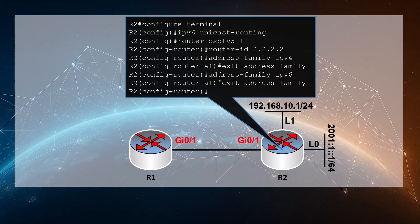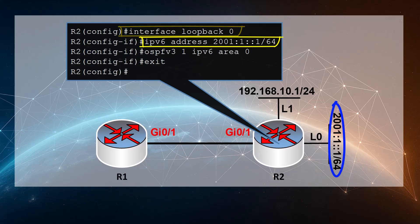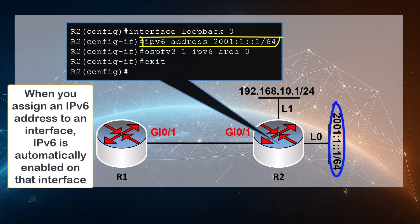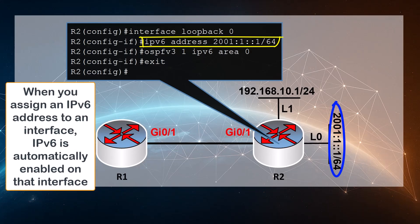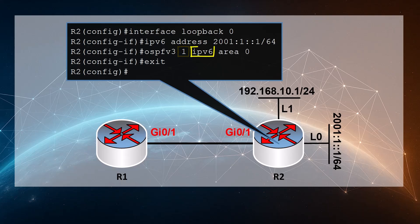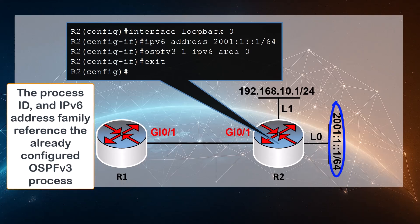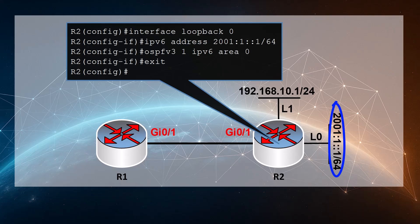Now R1 and R2 have IPv6 enabled, OSPF version 3 running, and both IPv4 and IPv6 address families participating in OSPF. We haven't yet configured any interfaces or IP addresses — let's do that now. Starting with loopback 0 on R2, we create the loopback interface and assign an IPv6 address. When you assign an IPv6 address, IPv6 is automatically enabled on that interface. Then we issue the 'ospfv3 1 ipv6 area 0' command, placing the interface in area 0 so its IPv6 address space is advertised via OSPF version 3.